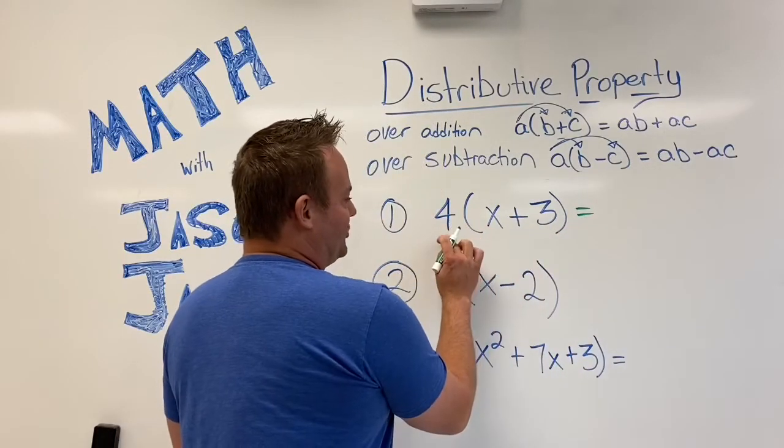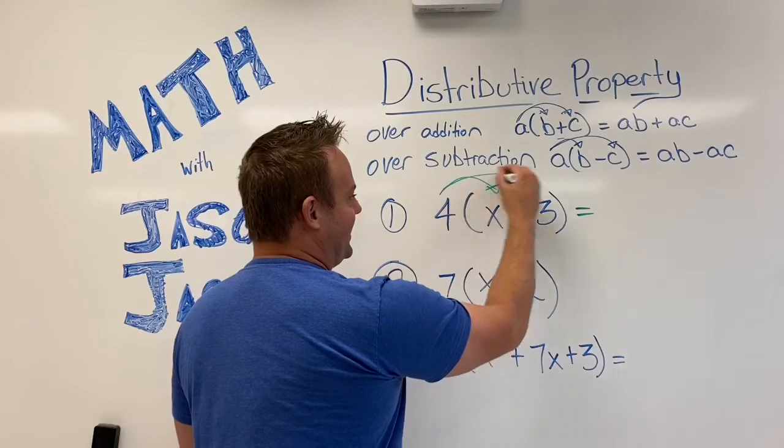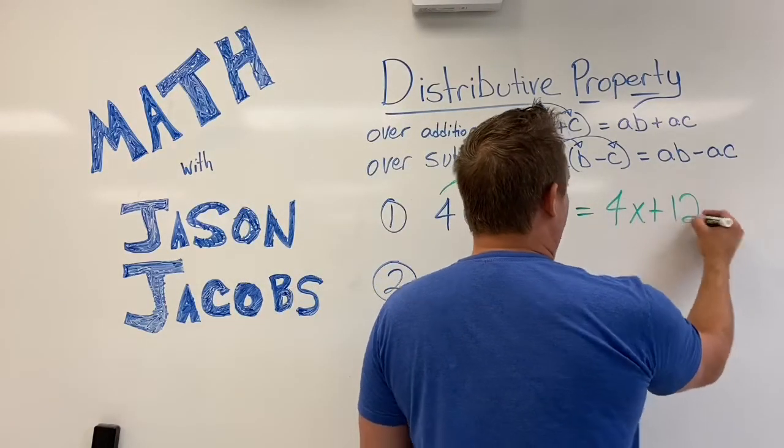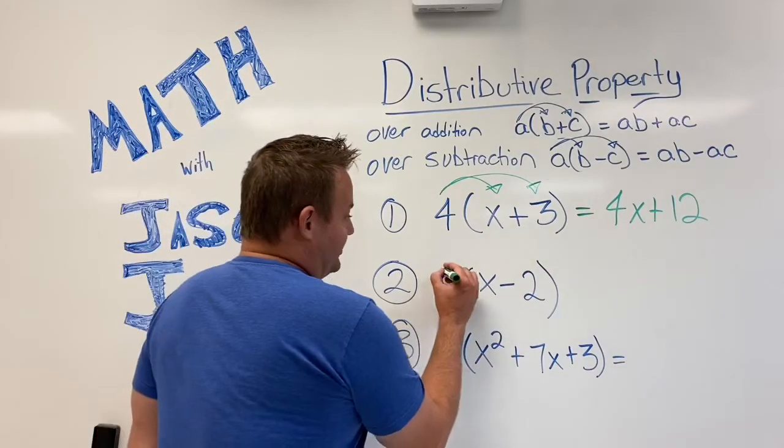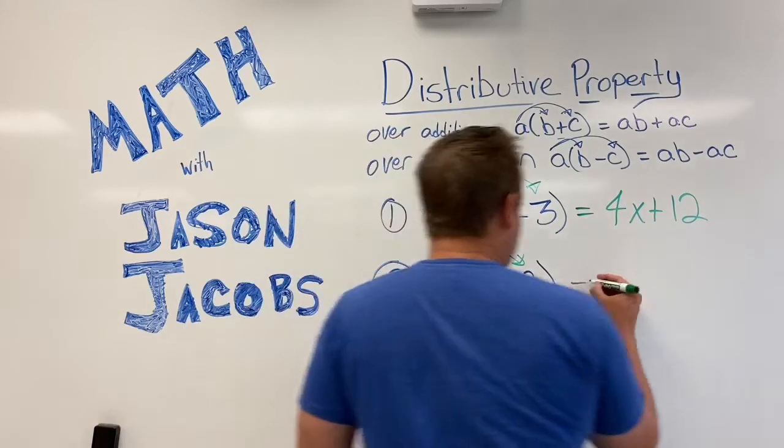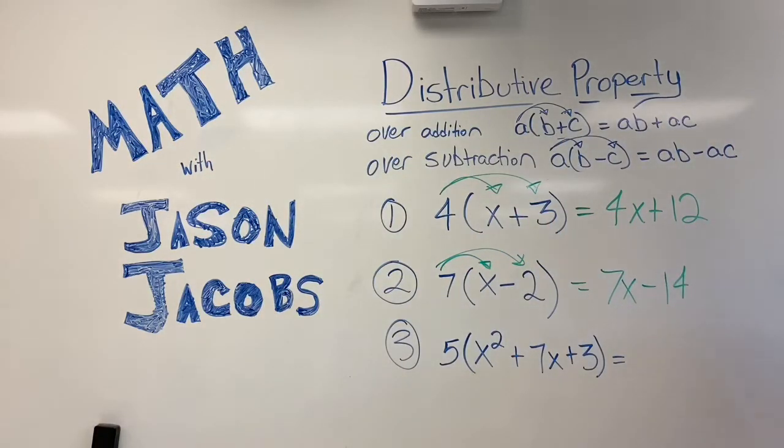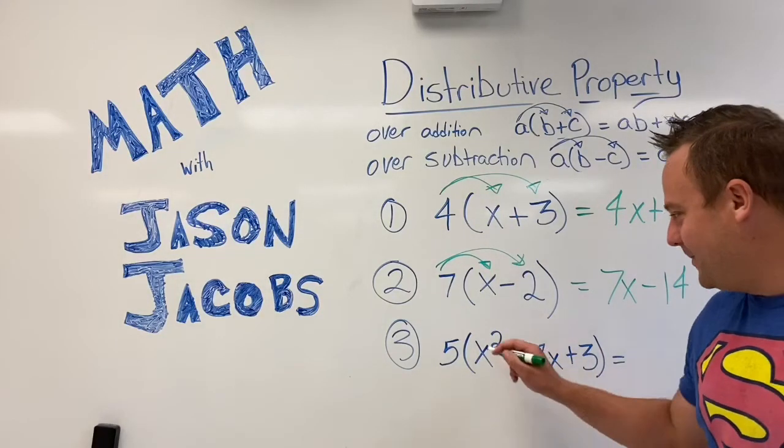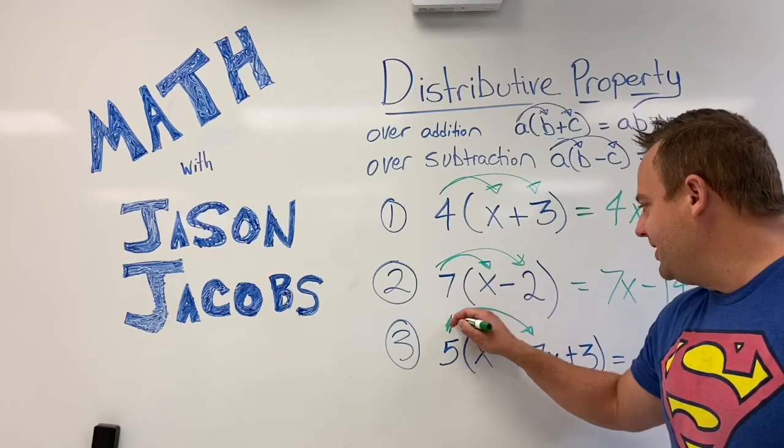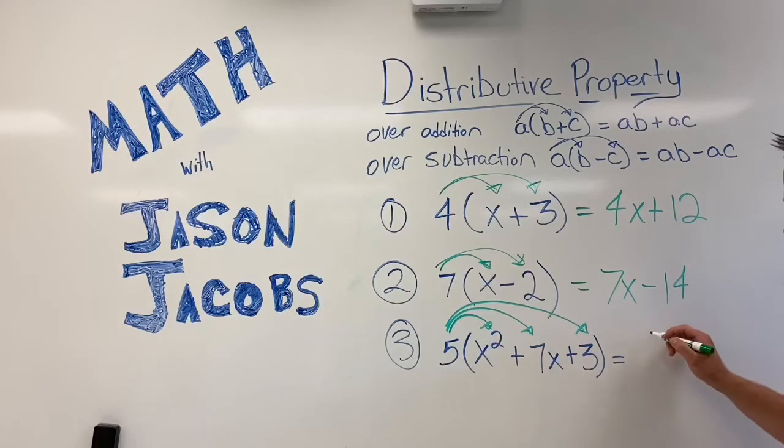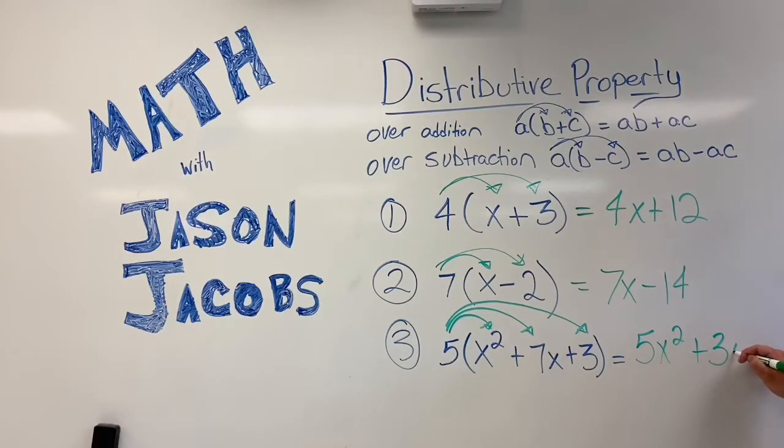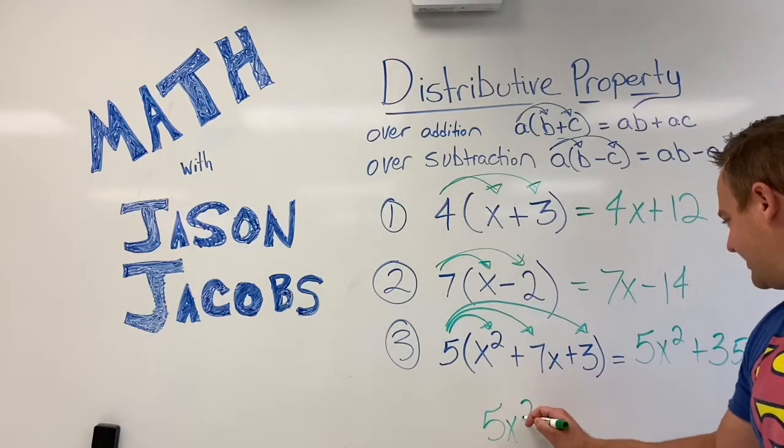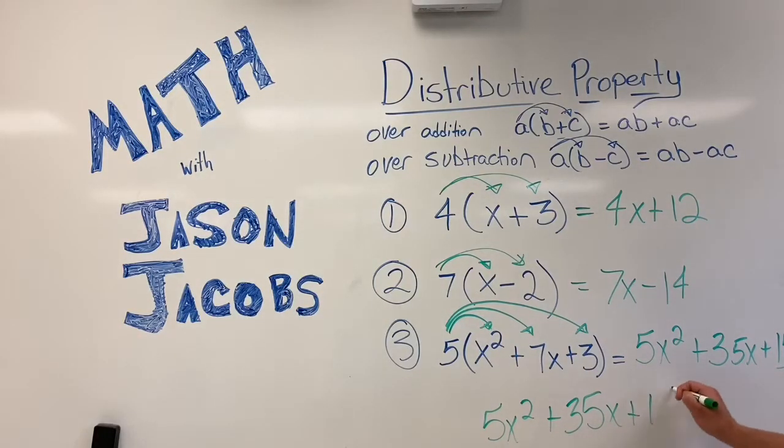Here we go. So you distribute the 4 to the X. So you have 4 times X and 4 times 3. So for this one, you get 4X plus 12. This was the distributive property over addition. Now, this one's the distributive property over subtraction. So 7 times X minus 7 times 2. And you have 7X minus 14. And now for the hardest one. Let's see if you guys got it. The 5 distributes to all three terms inside the parentheses. And we have 5 times X squared is 5X squared plus 5 times 7 is 35X. So we have 5X squared plus 35X plus 15 there.